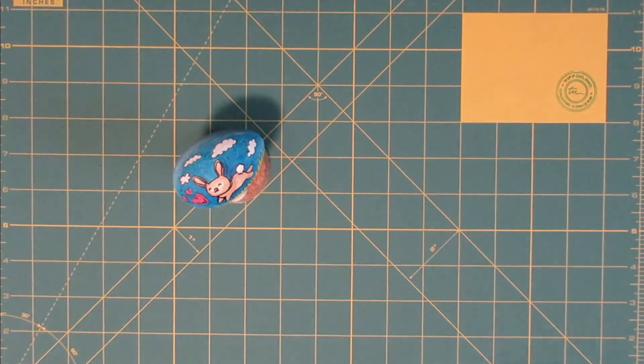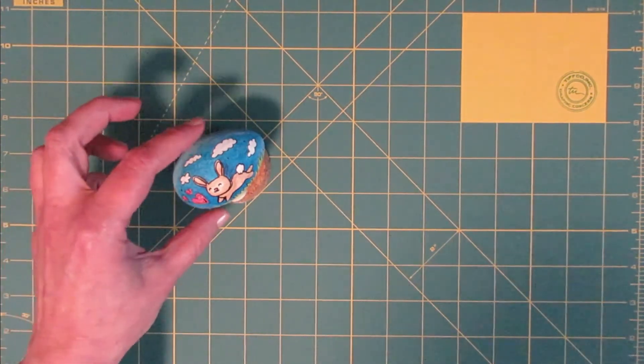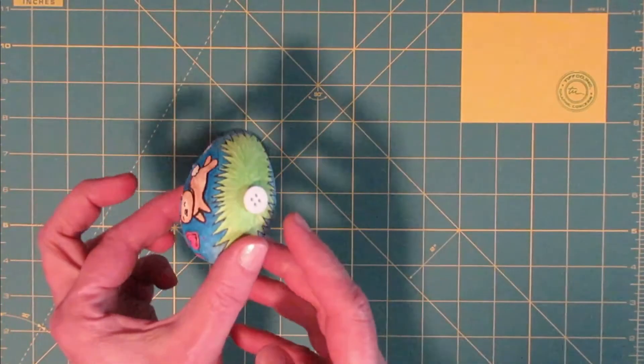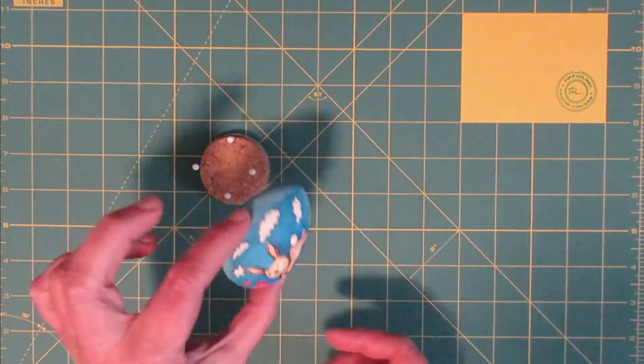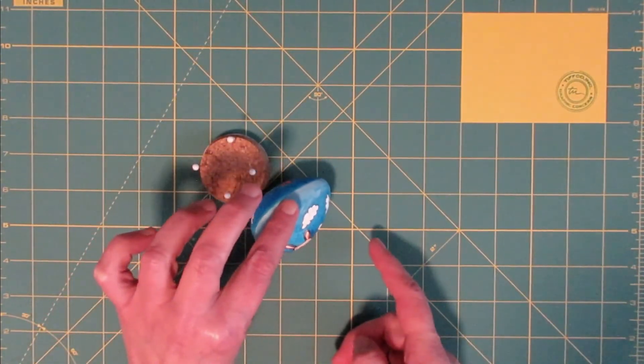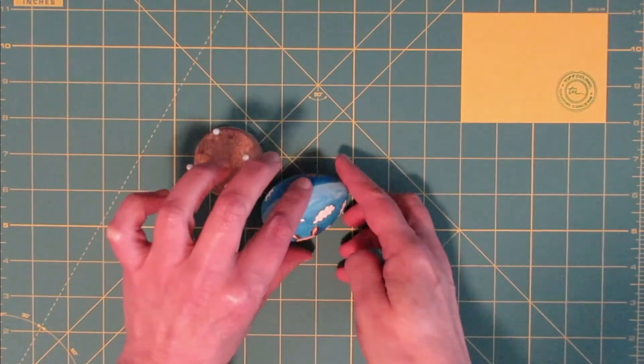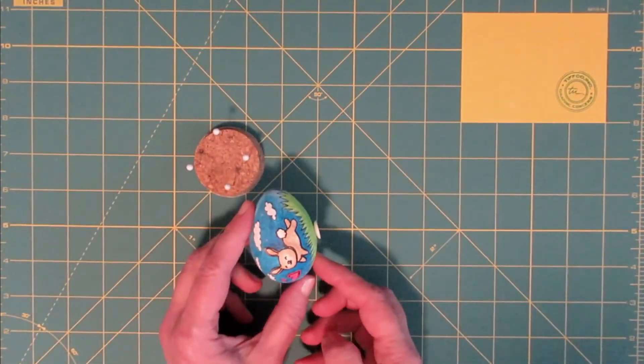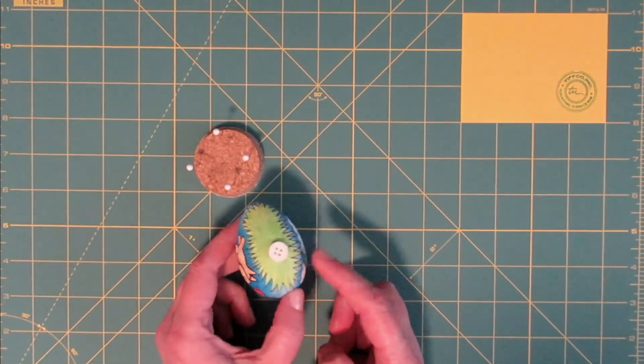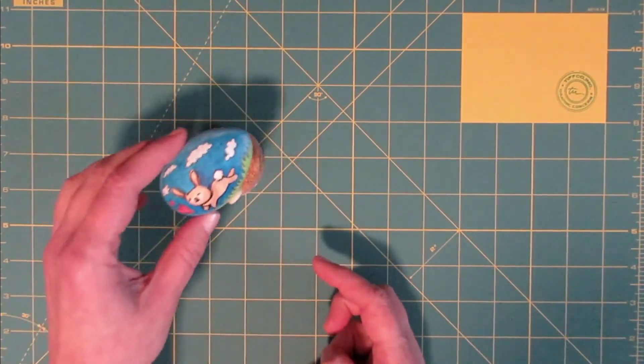Now, you don't have to do this part, but one thing I like to sometimes do is glue a small, flat button onto the bottom of the egg so that the person can stand it up on their desk or whatever. Don't use a hot glue gun to attach the button. You might melt a hole in the egg.